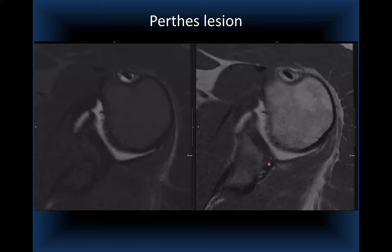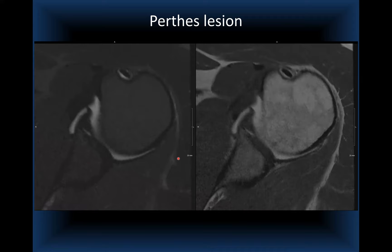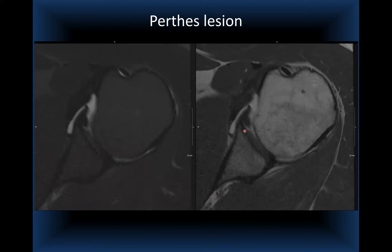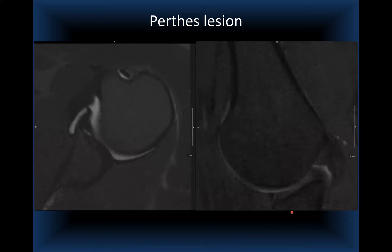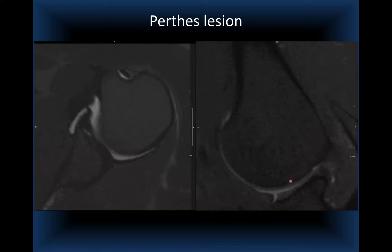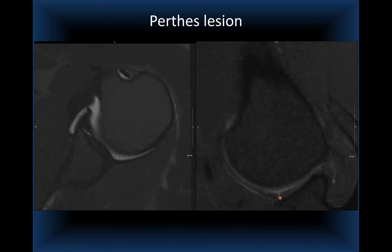In one case, on axial images there is a small tear at the chondrolabral junction anteroinferiorly on two consecutive slices — and that's it. But on ABER, the same patient shows the lesion on four consecutive slices, giving a better sense of the injury extent. In another case, the Perthes was invisible on standard axial images even retrospectively, but was detected on only two ABER slices — demonstrating how ABER can save the diagnosis.